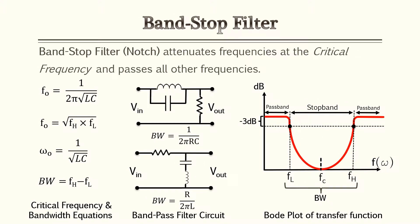The last type of filter is the band stop filter — also a combination of a low pass and high pass filter used in a slightly different way. A band stop filter, also known as a notch filter, attenuates frequencies at the critical point and passes all other frequencies. On a Bode plot it will show a straight line with a notch or dip at the critical frequency area. The circuits and associated equations are provided, along with an equation to determine bandwidth.